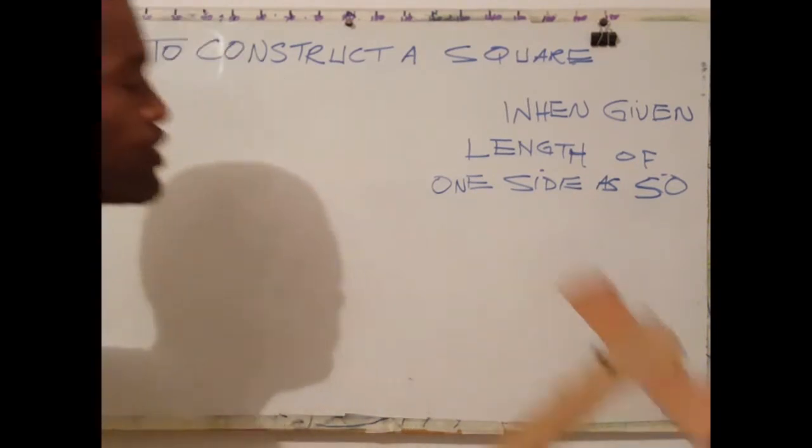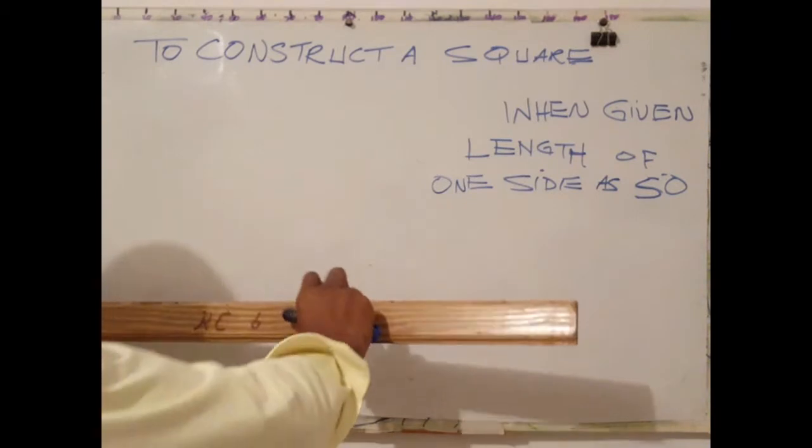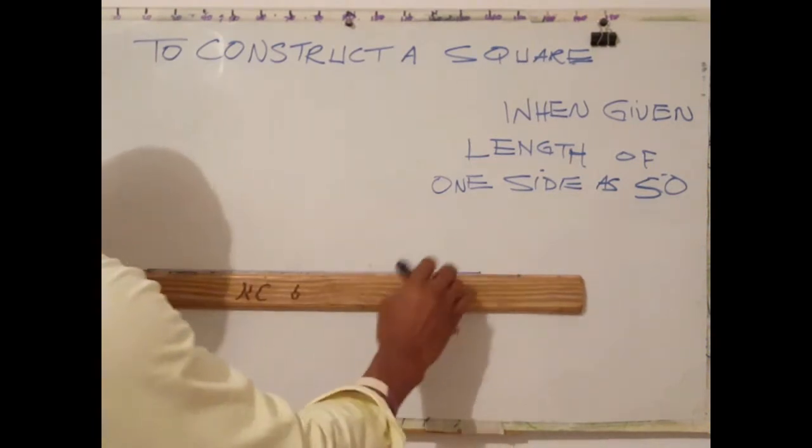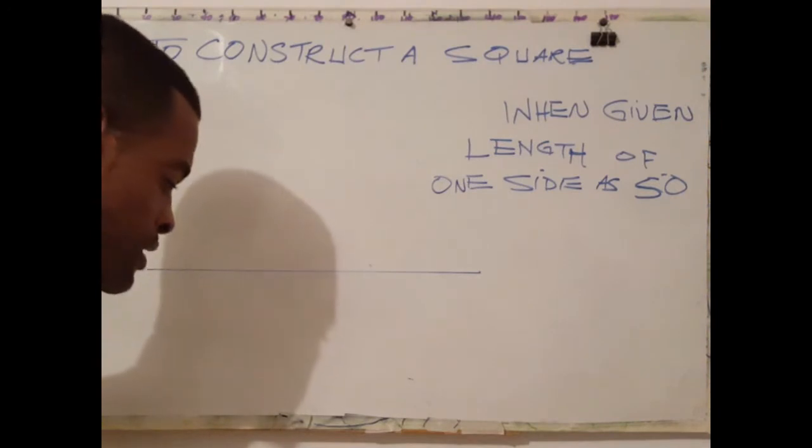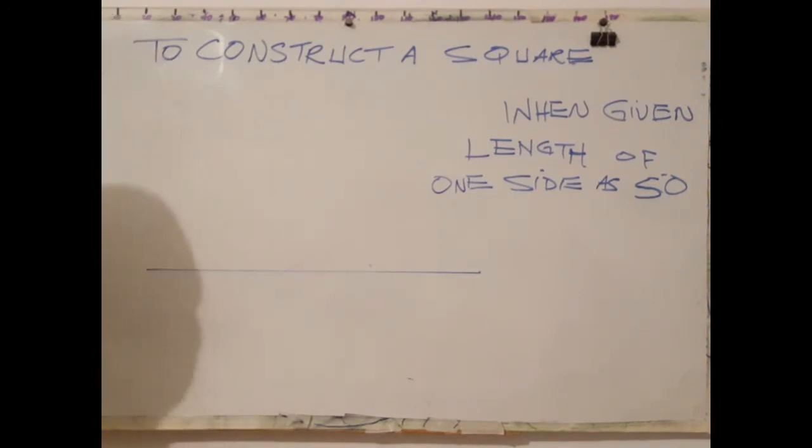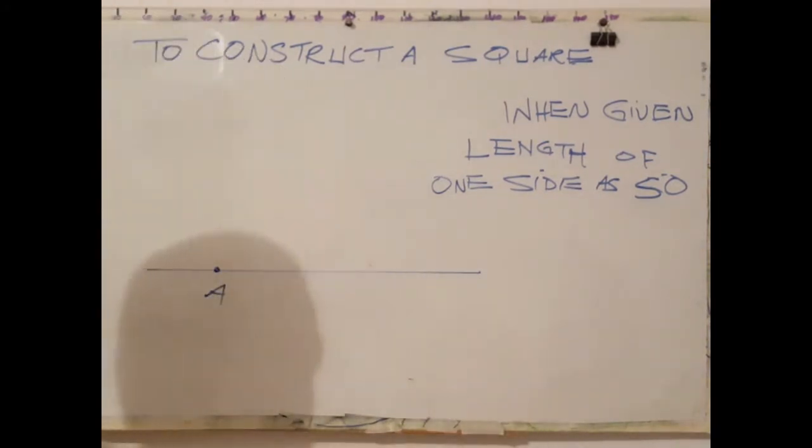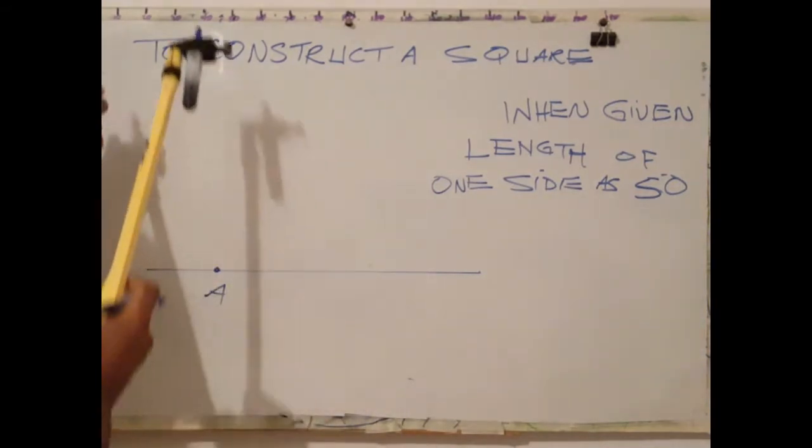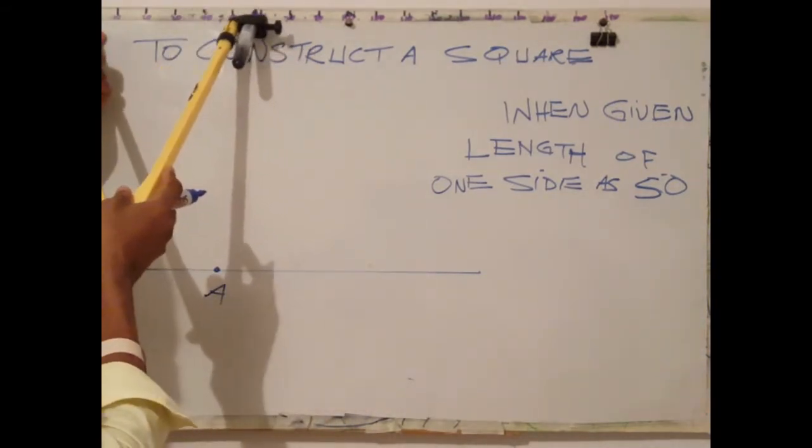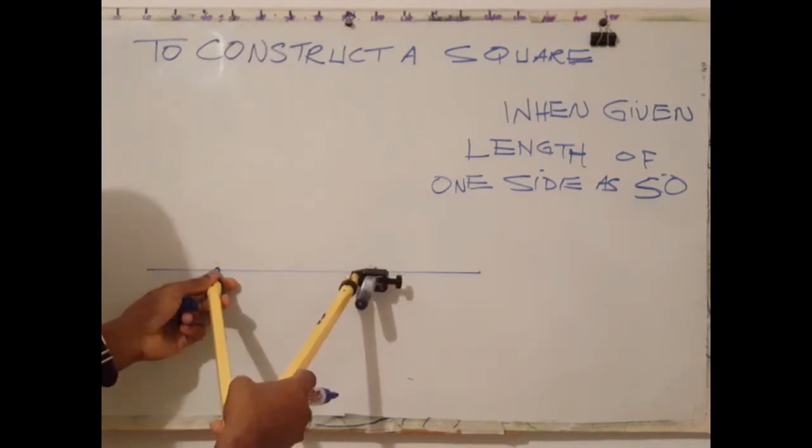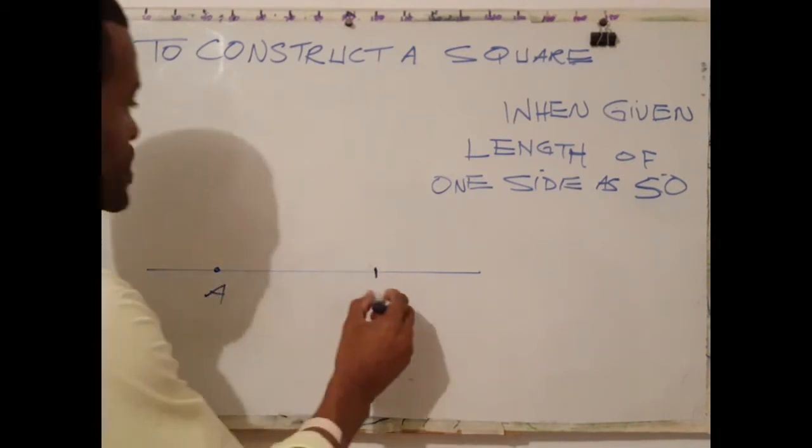To construct a square when given the length of one side, the first step is to draw a random length line, approximately more than 50 millimeters. Next step is to identify a starting point A. From point A, measure 50 millimeters which is the length of one side, and label this point B.